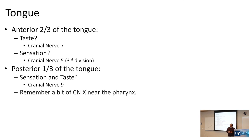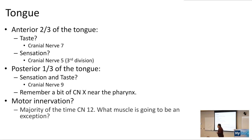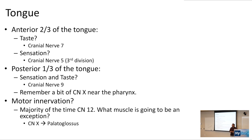The motor innervation of the tongue is going to be CN 12 the majority of the time. However, there is one exception: palatoglossus. Even though it has 'glossus' in the name — making you think of tongue — palatoglossus is actually innervated by cranial nerve number 10. That's an important exception they can test.